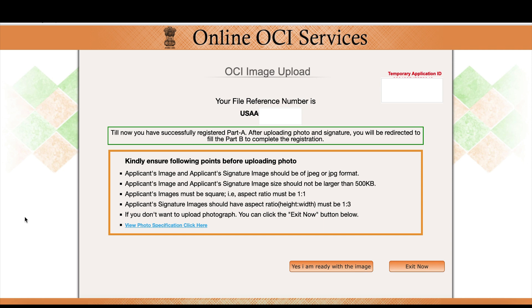After clicking Submit, you land on a page showing your temporary application ID and file reference number. Write down the date you applied and save both numbers. Next, you need to upload your passport photo and your application signature. Make sure these are in the correct format and the specified ratio.